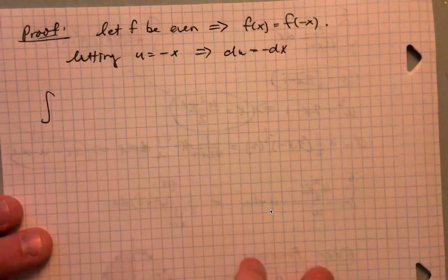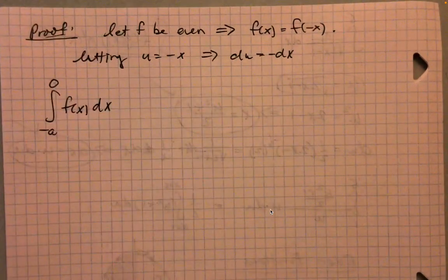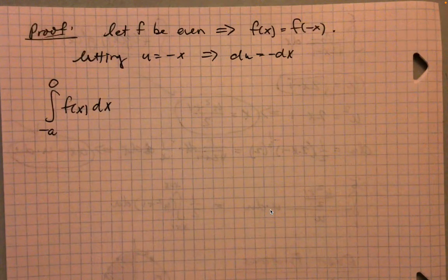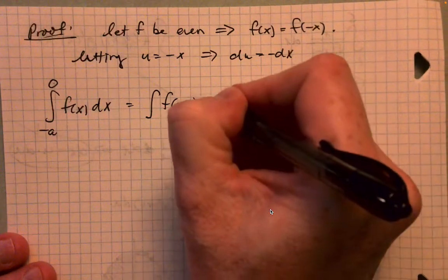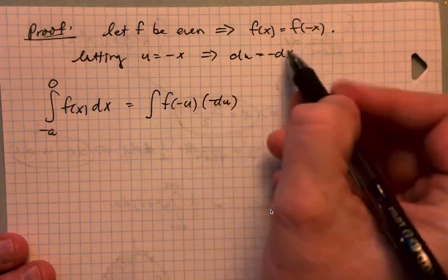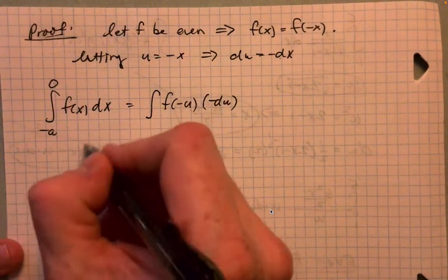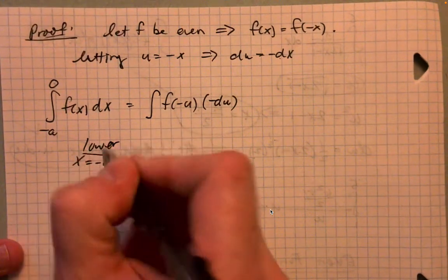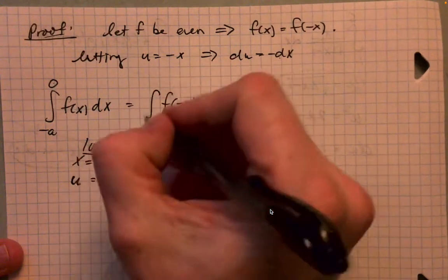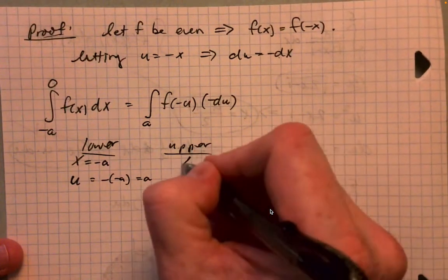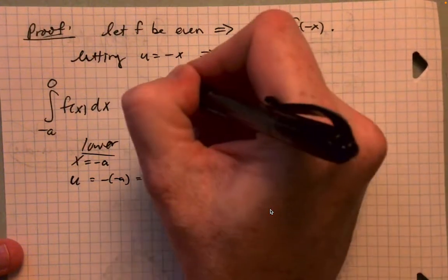And so we'll start with the negative a up to zero piece: integral of f of x dx. Now what we're going to do here is we're going to rewrite this as the integral of f of negative u times negative du. And that comes from right here: if du is equal to negative dx, then dx is equal to negative du. We need to adjust the bounds here. So instead of negative a, the lower, if x is equal to negative a, then u is equal to negative negative a, which is just a. So I get a here on the upper. If x is equal to zero, of course the bound will stay the same: negative u is equal to negative zero, which is zero.